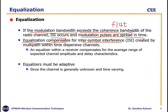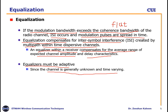Equalization compensates for inter-symbol interference created by multipath within a time-dispersive channel. The equalizer lies within the receiver and compensates for the average range of expected channel amplitude and delay characteristics. To better perform, equalizers must be adaptive — since the channel is generally unknown and time-varying, equalizers must have the capability to adapt to time-varying or unknown channel conditions.